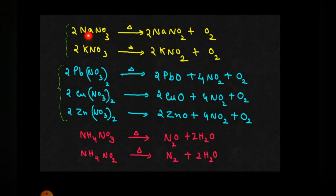Sodium and potassium, being highly reactive, will be holding the nitrate more tightly. What will be the product of the reaction? You will be getting sodium or potassium nitrite — you will be getting the '-ITE' form. Along with that, oxygen gas will be formed. So whenever sodium nitrate or potassium nitrate is heated, the gas evolved is oxygen.